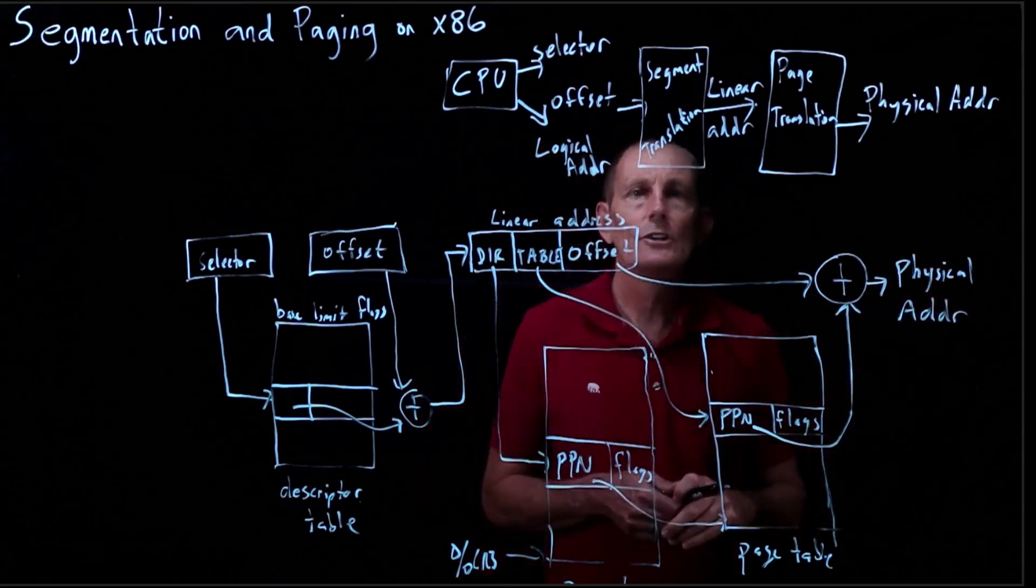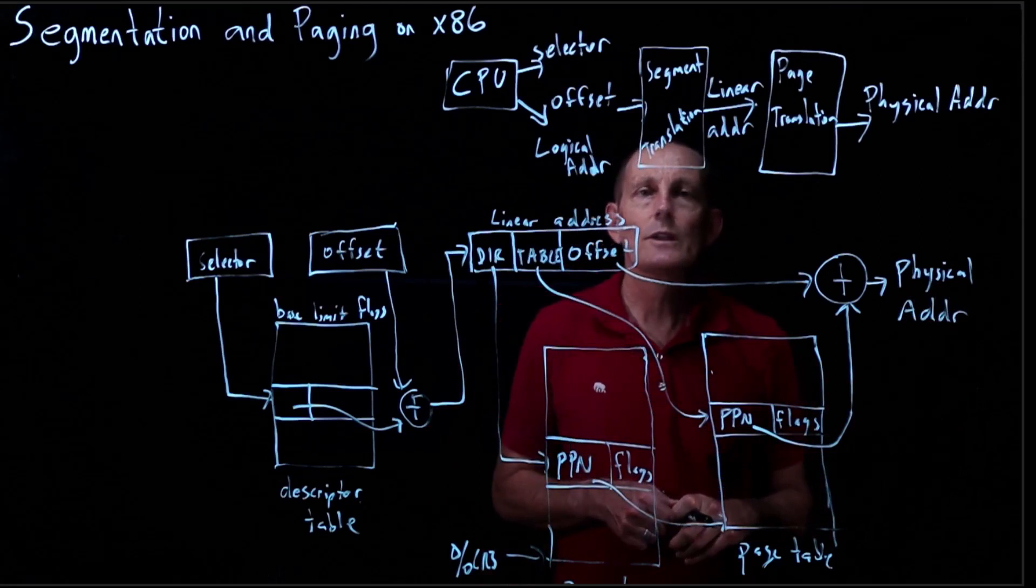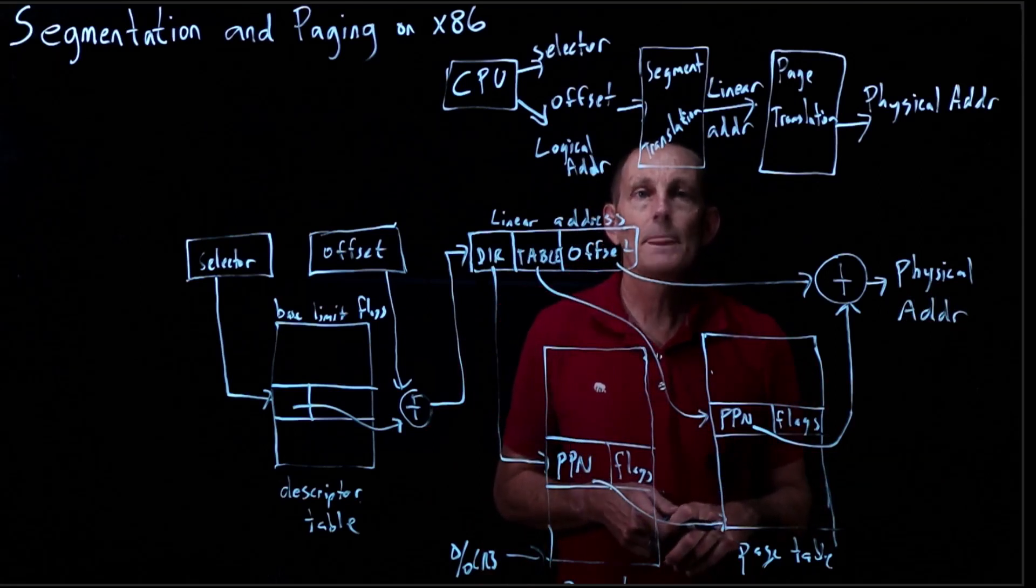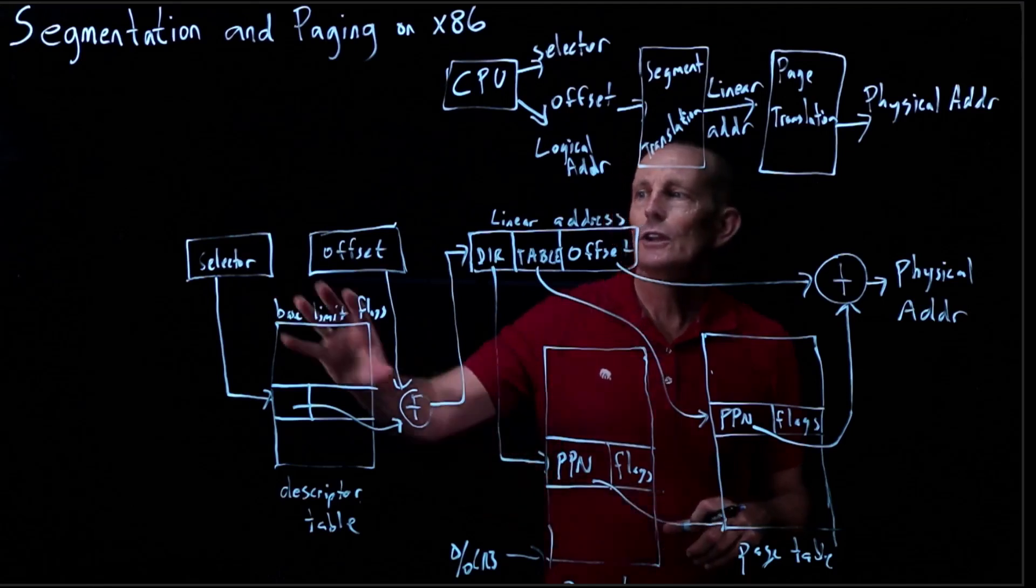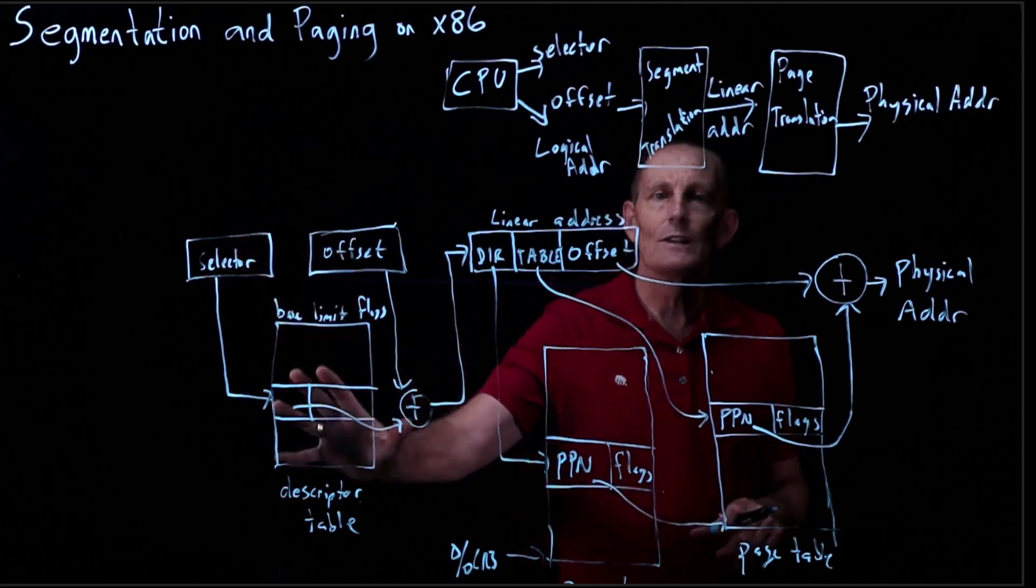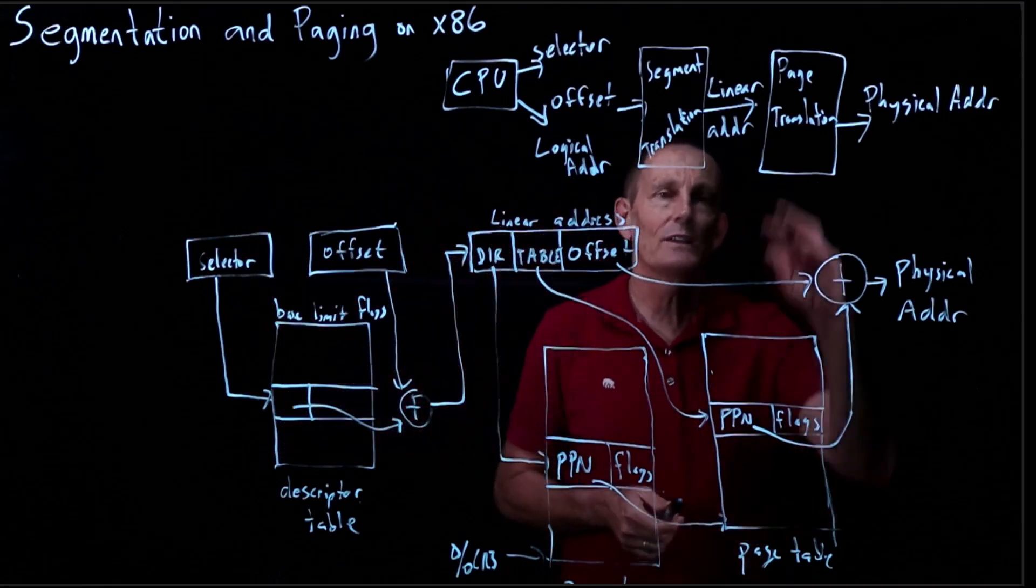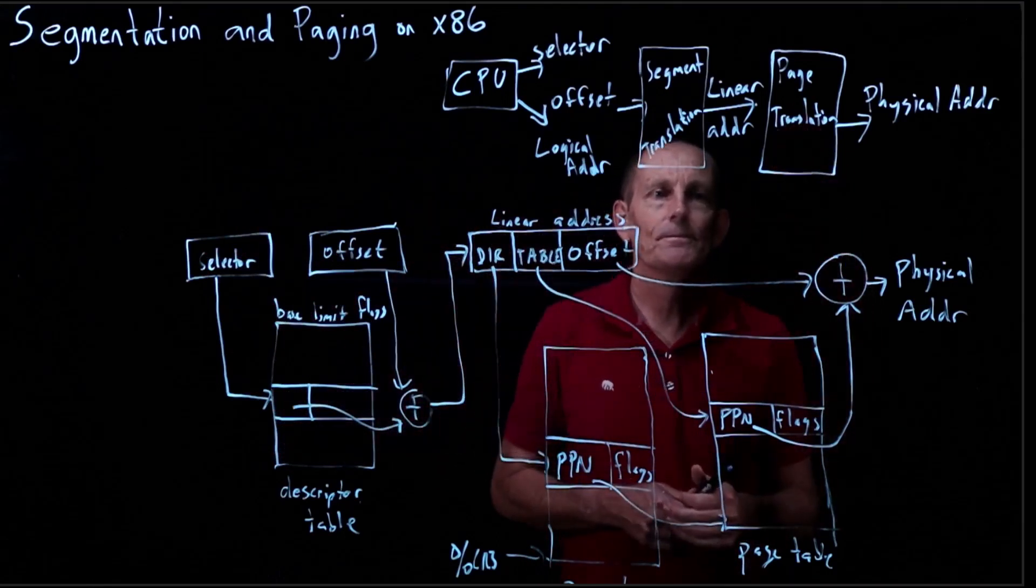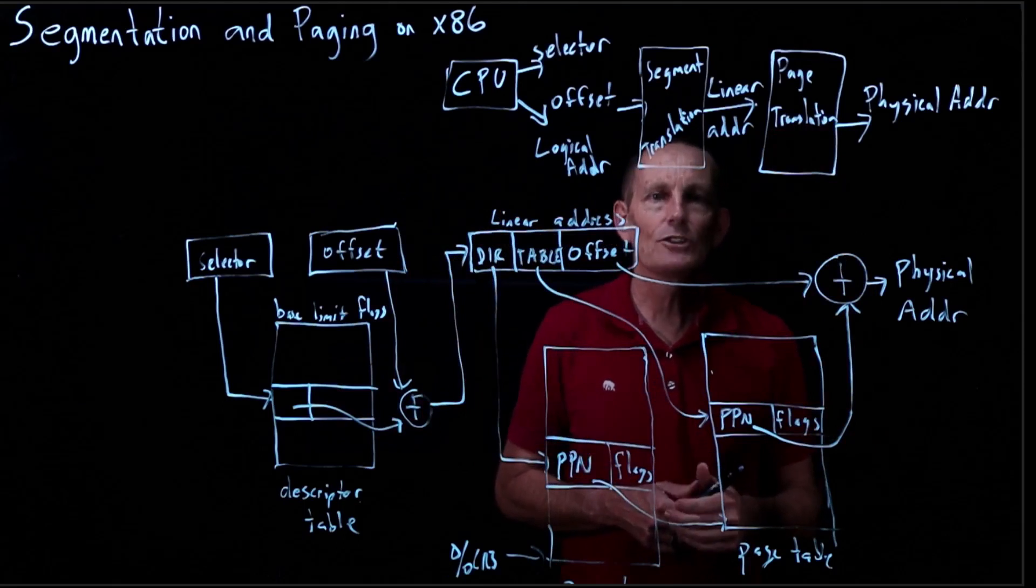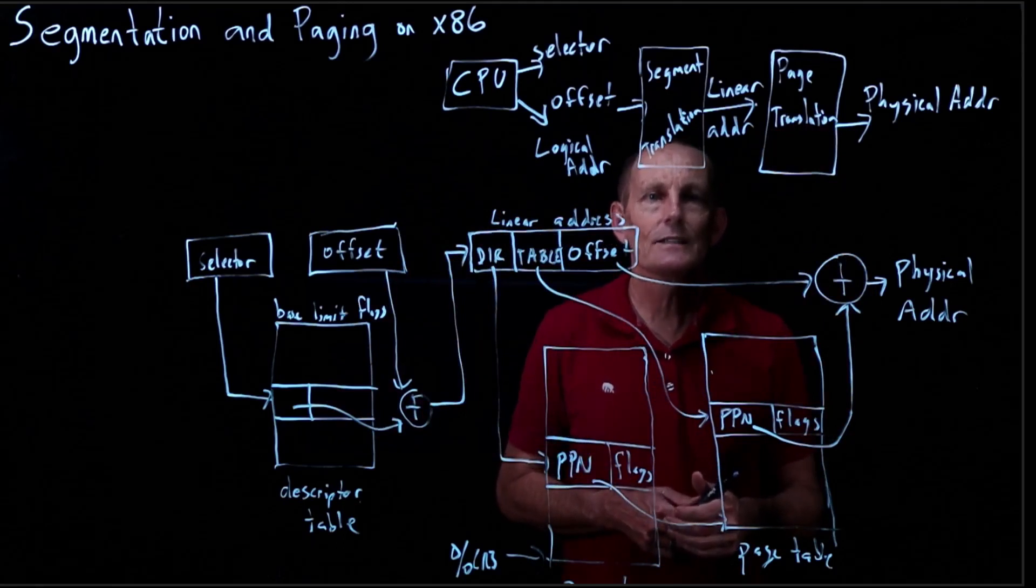We are not going to be doing much with segmentation with the two operating systems we're looking at, XP6 and JAWS. And that's not uncommon. So in general, we're not going to be doing much as far as setting up segments, so mostly we're going to be relying on this page translation. But that is how segmentation and paging interact on an x86.